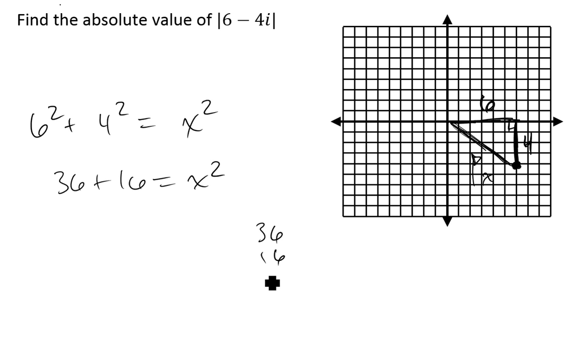If I add those together, that's... 52. I'm embarrassed - I'm adding two numbers here. Yeah, that's 52. So 52 is x squared.